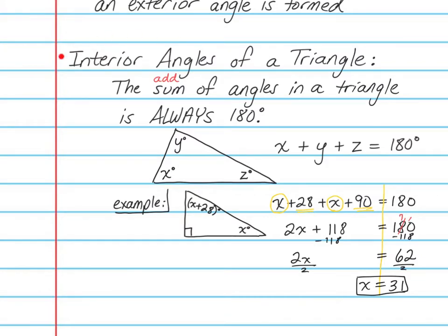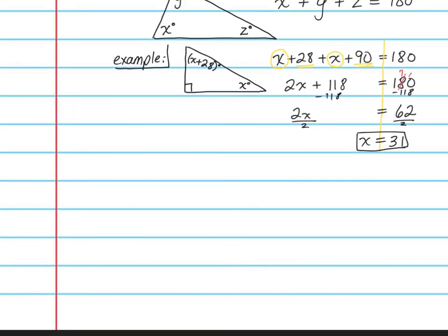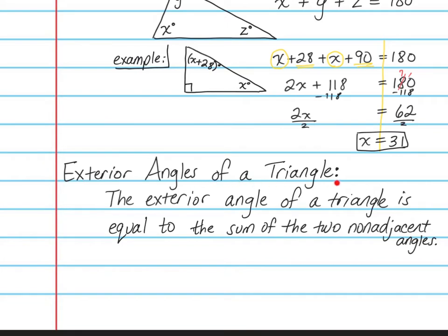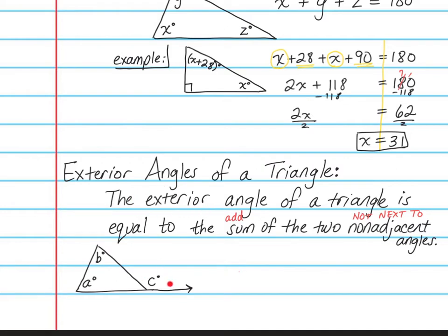That covers the interior angles of a triangle. Now let's talk about exterior angles of a triangle. The exterior angles of a triangle theorem says that the exterior angle of a triangle is equal to the sum — remember, sum means add — of the two non-adjacent angles. Non-adjacent means the angles that are not next to that exterior angle. In this triangle that I have drawn, angle C is my exterior angle on the outside of the triangle. The exterior angle equals the sum of the two non-adjacent interior angles, which are A and B.